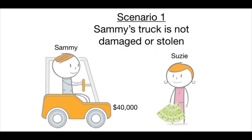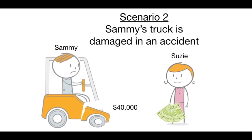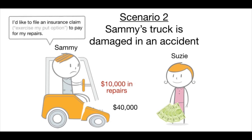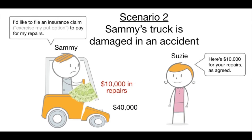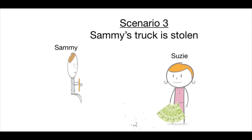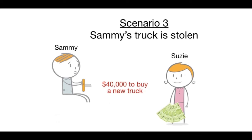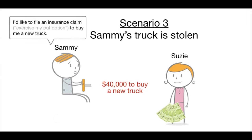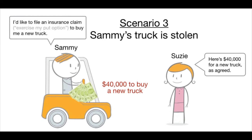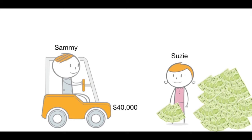Three things could happen. In scenario one, Sammy's truck is not damaged or stolen during the year, so Susie keeps the $1,500 premium — Sammy is okay with losing it for the protection it provided. In scenario two, Sammy's truck is damaged requiring $10,000 in repairs; he exercises his put option by filing a claim and Susie pays him $10,000. In scenario three, Sammy's truck is stolen; he files a claim for the full replacement value and Susie pays him the full $40,000. Susie is happy because she sold many such insurance policies, most of which never resulted in a claim, providing her a net profit overall.